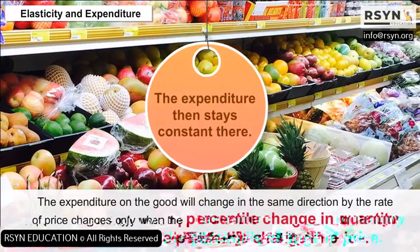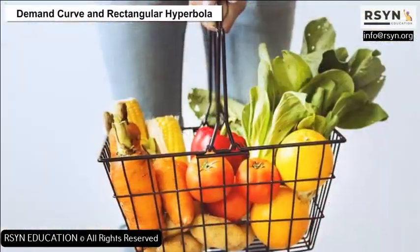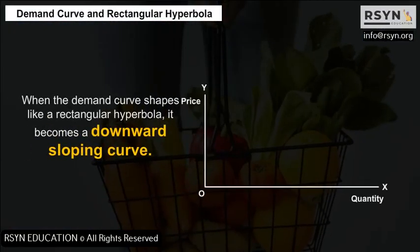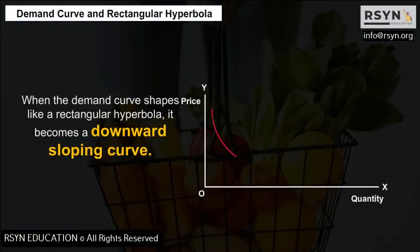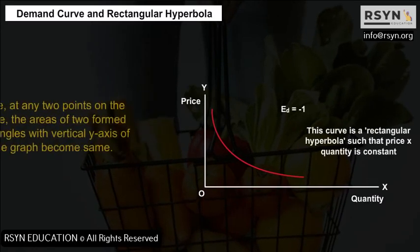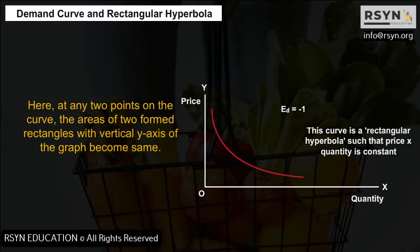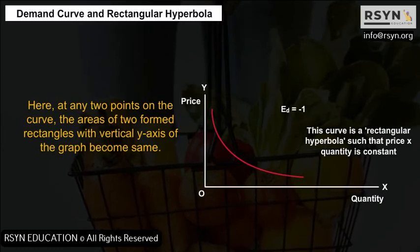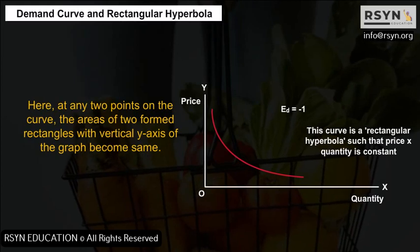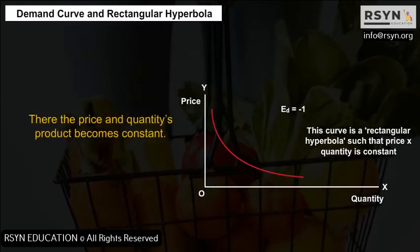Demand Curve and Rectangular Hyperbola: When the demand curve shapes like a rectangular hyperbola, it becomes a downward sloping curve. At any two points on the curve, the areas of the two rectangles formed with the vertical y-axis of the graph become the same. The product of price and quantity remains constant.